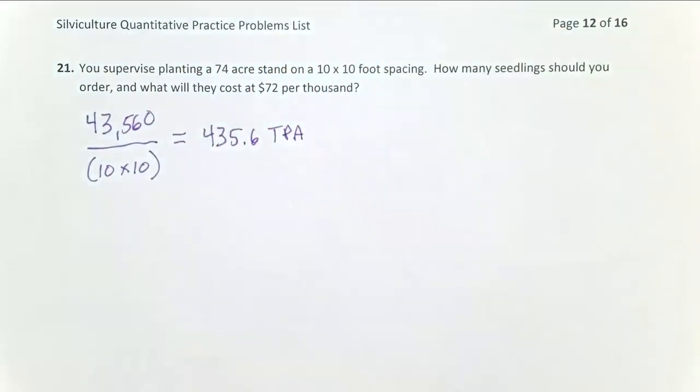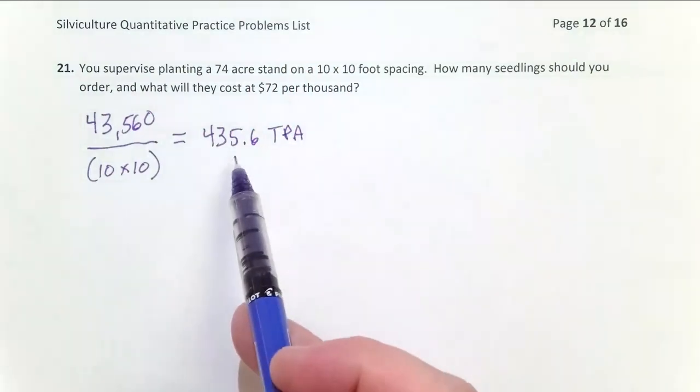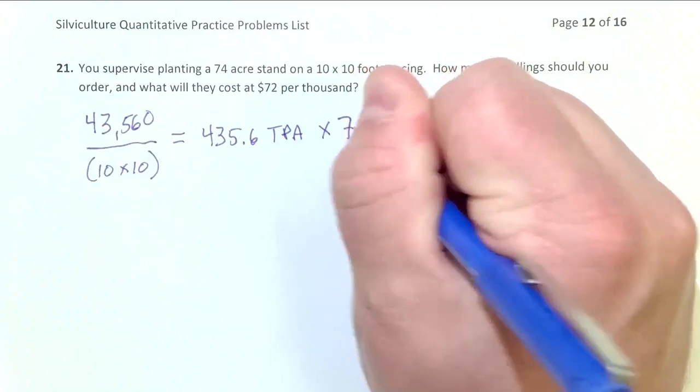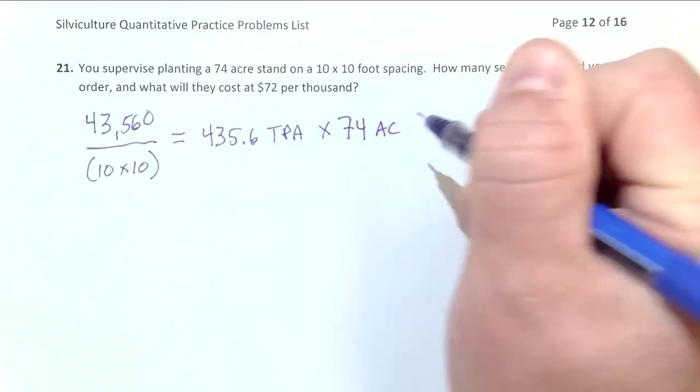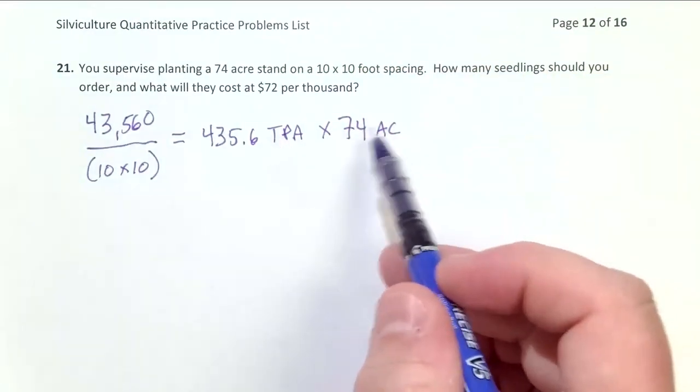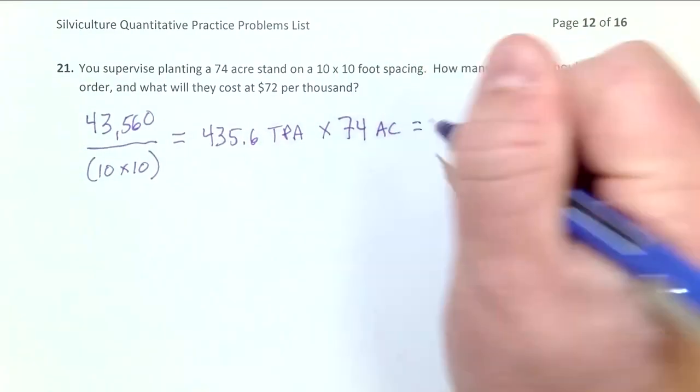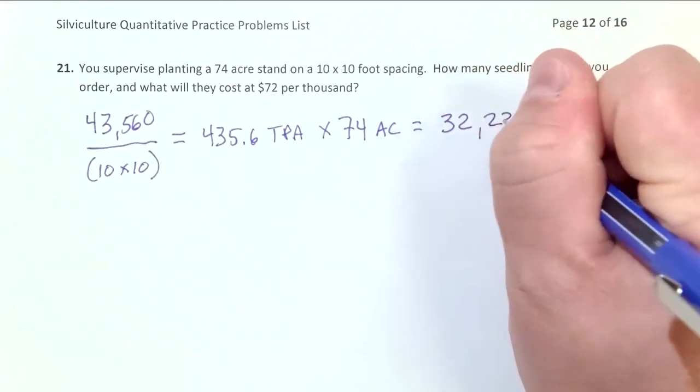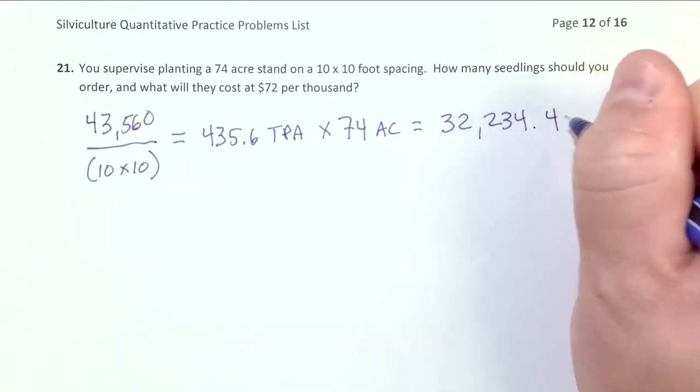So now we know how many trees per acre we want. That's trees on one acre. We have 74 acres, so here's a shorthand way to do this, multiplied by the 74 acres. So trees divided by acres, now multiplied by acres, that just gives us trees. So we're going to order 32,234.4 trees or seedlings.